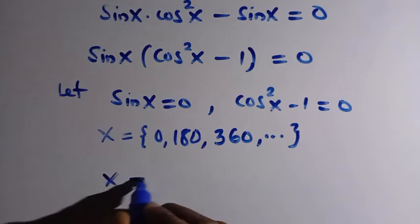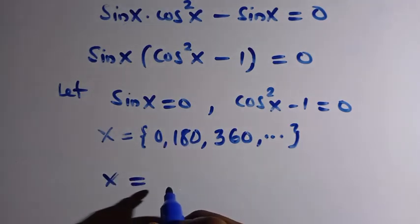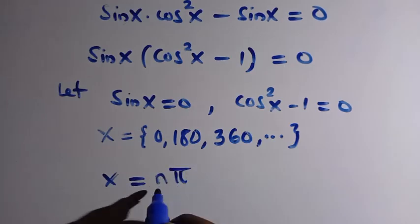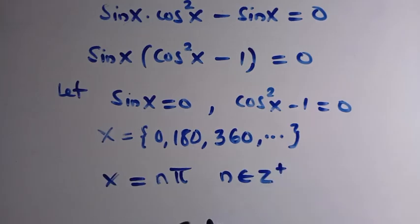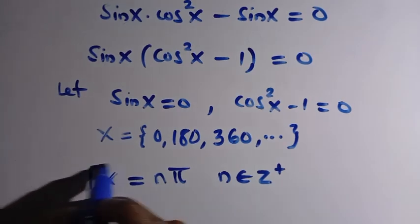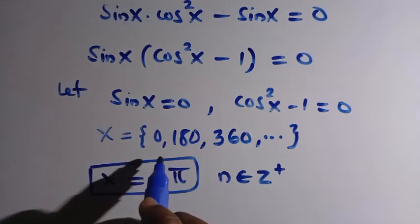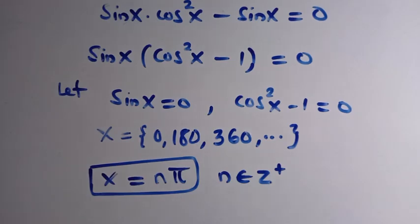We can express this in a general form. Since 180 degrees equals π radians, the general solution for sine x equals zero is: x equals nπ, where n is any integer. So when n equals 0, x equals 0; when n equals 1, x equals 180; when n equals 2, x equals 360; and so on.